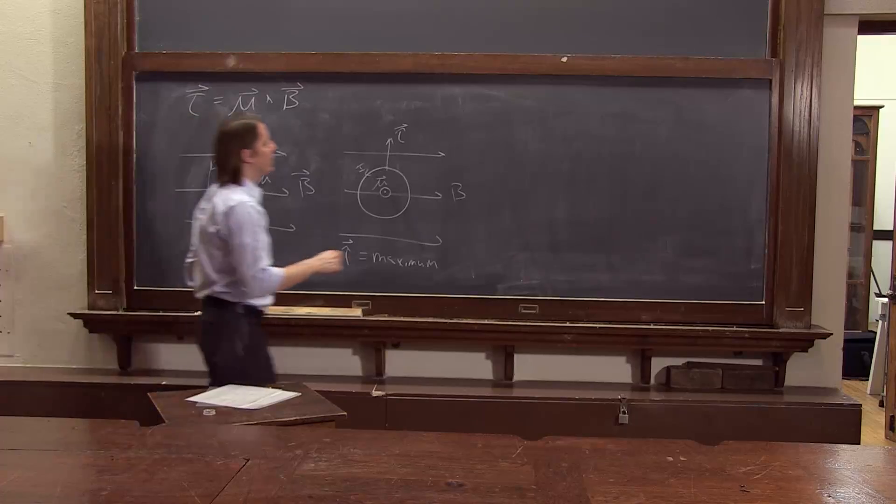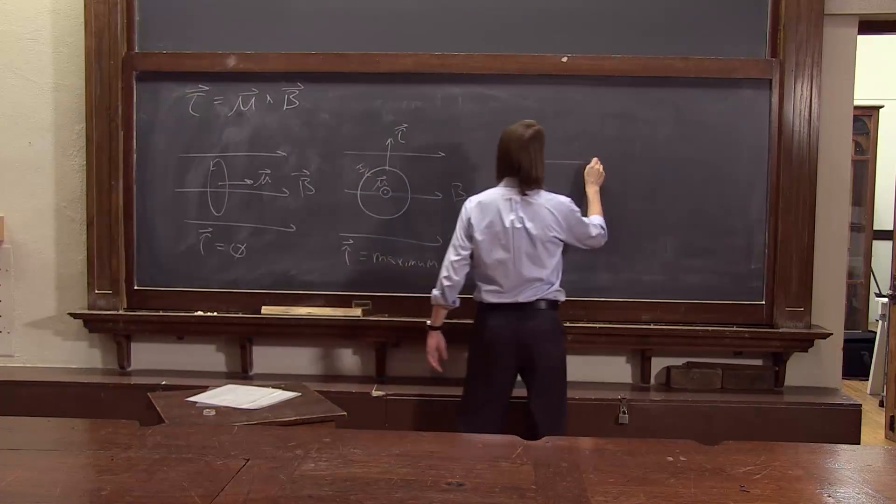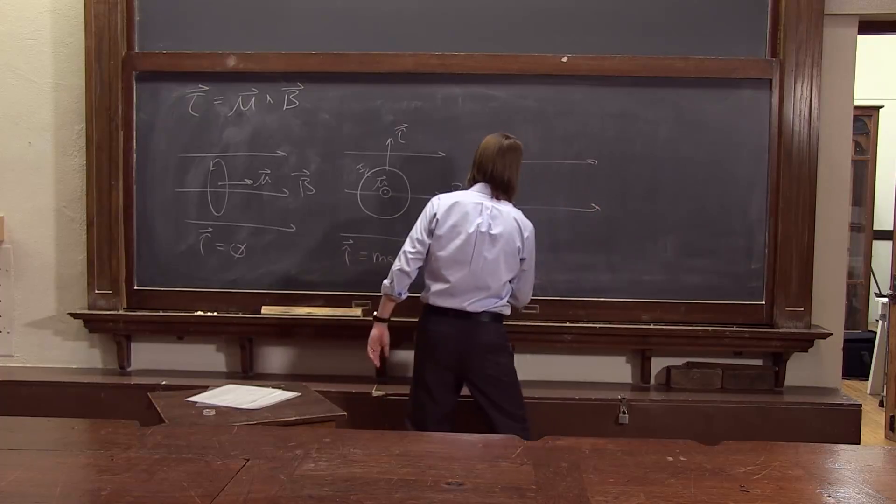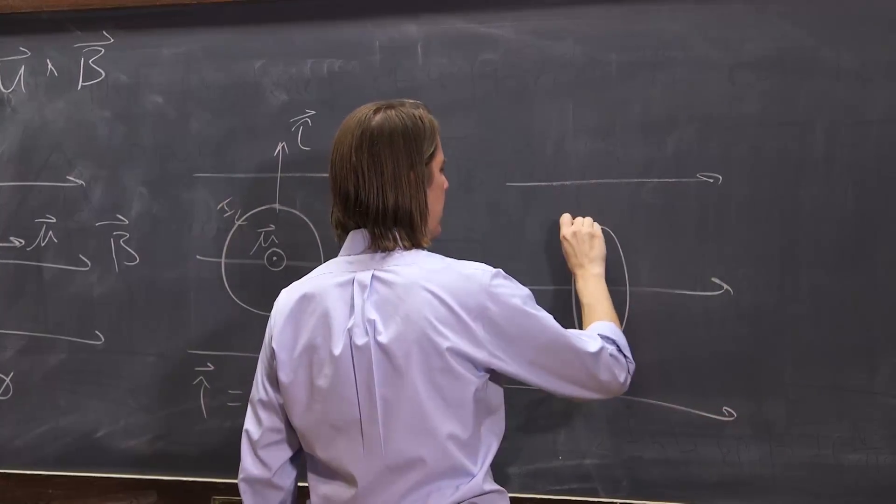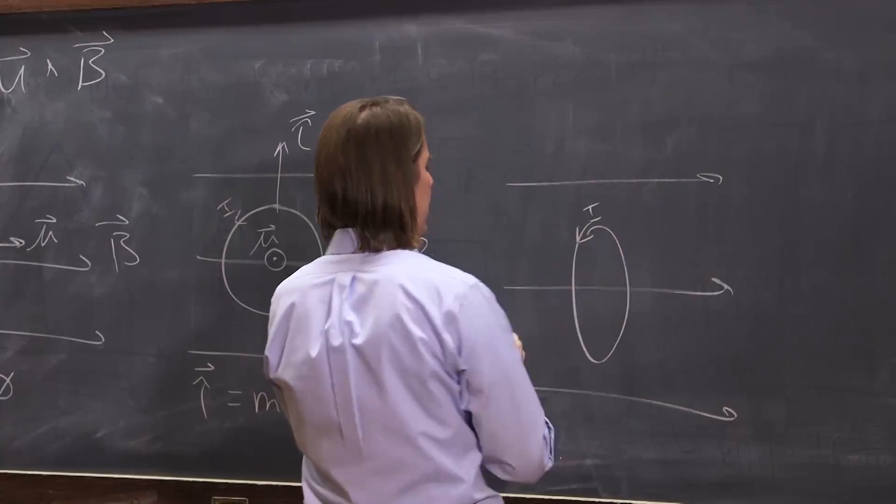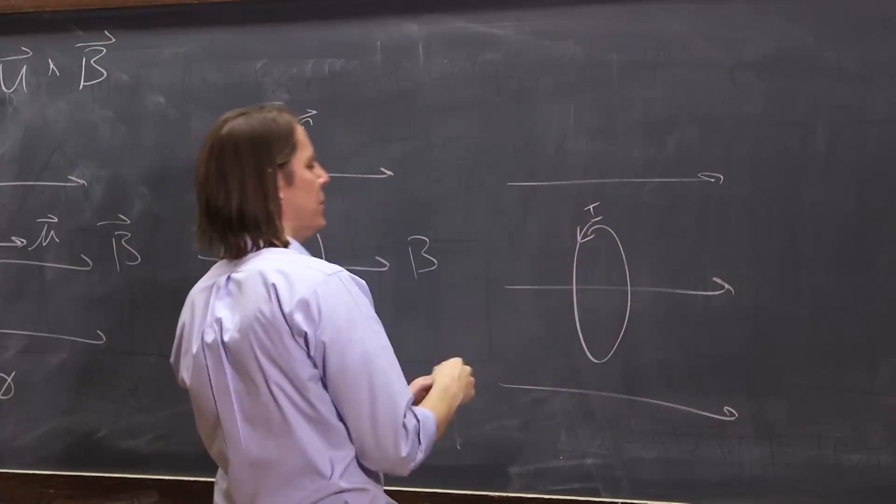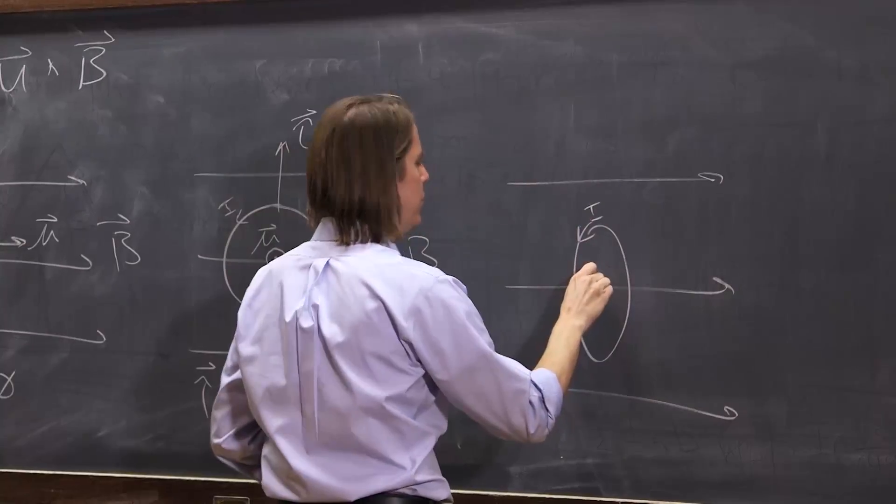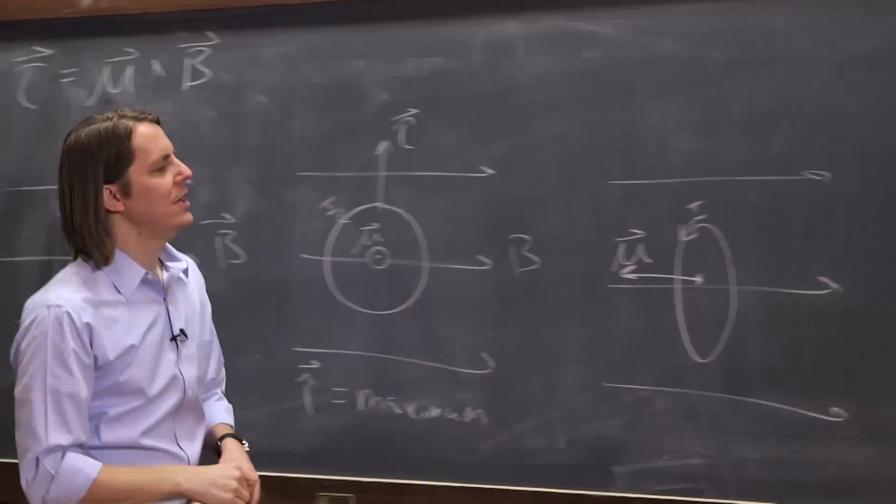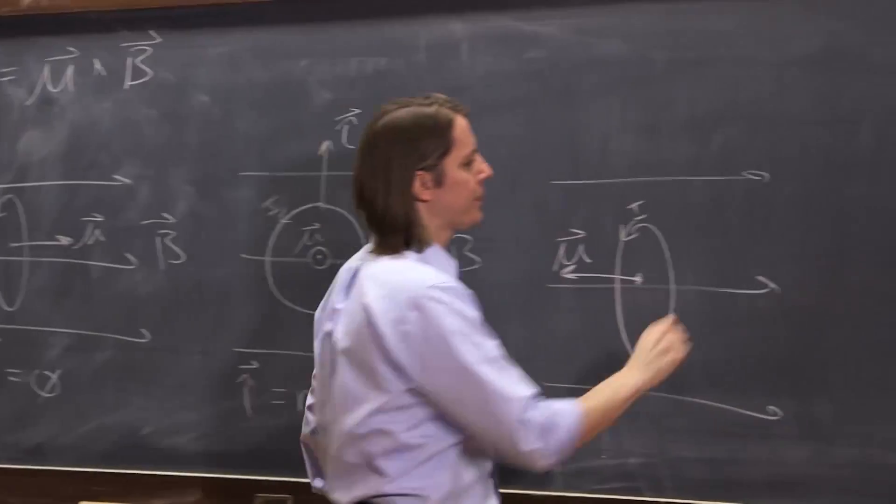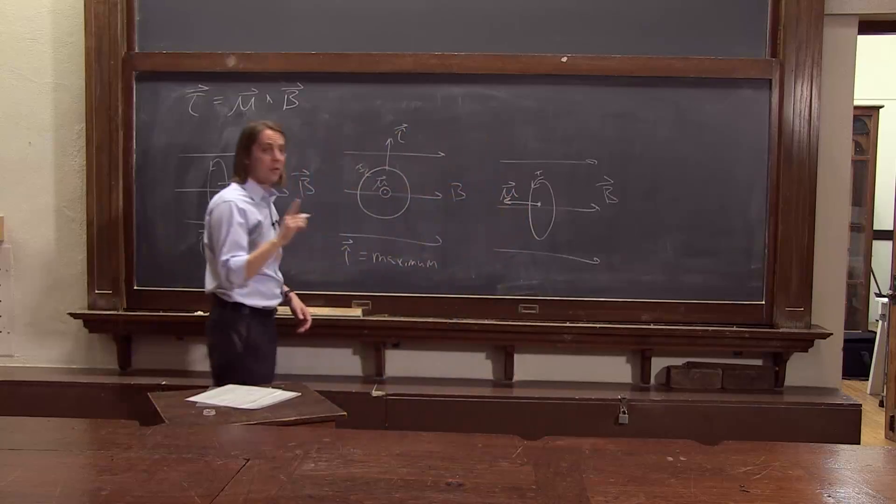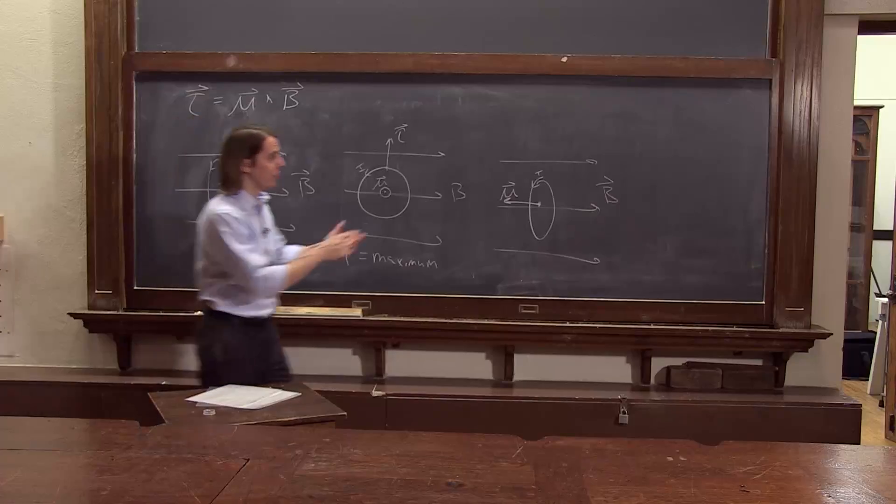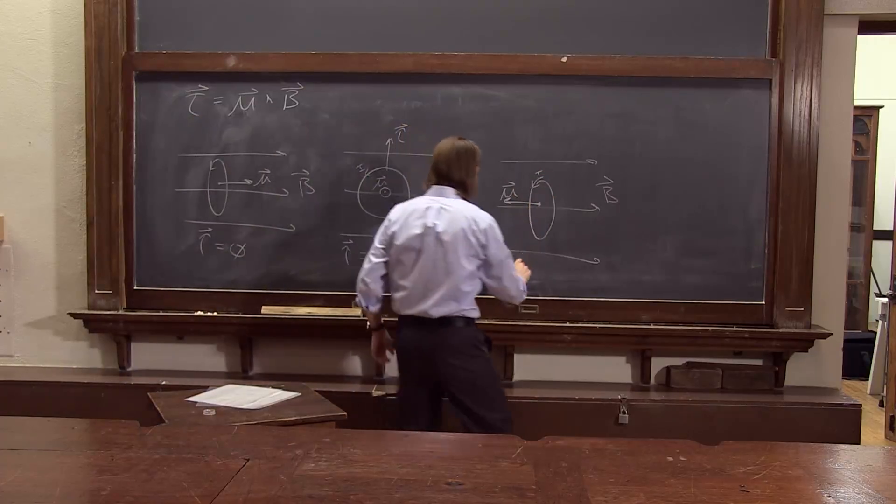We could turn it even further, all the way anti-parallel to the B field. So now, I'm drawing it like this is going back, and μ is in the opposite direction of the B field. Here, torque is zero because μ cross B is zero. Their angles are 180 degrees.